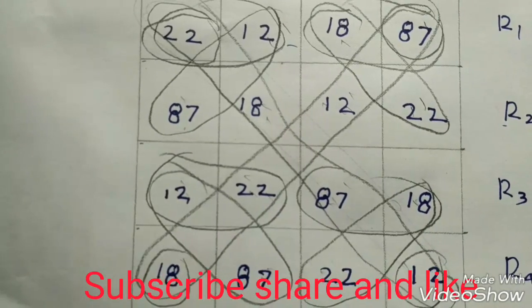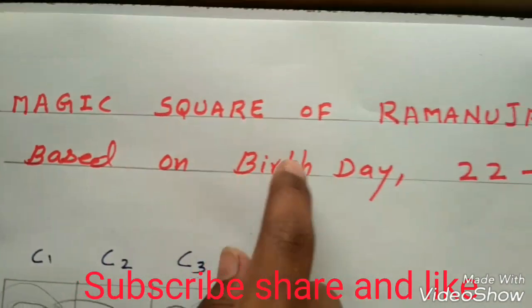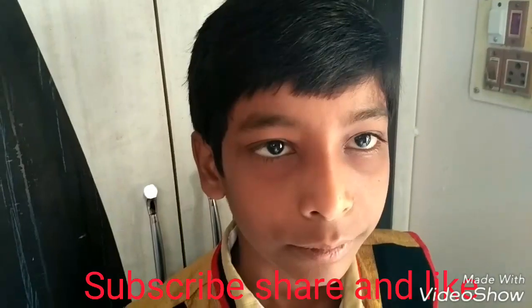Similarly we can get more than 30 ways. This is magic square of Ramanujan. Prepare yourself on your birthday. Thank you.